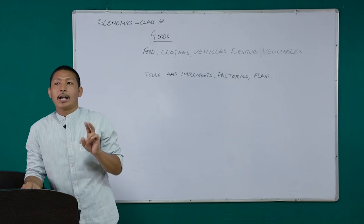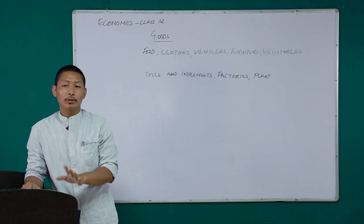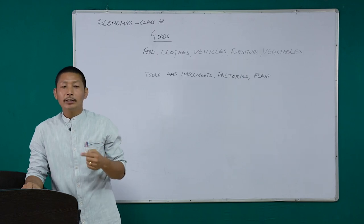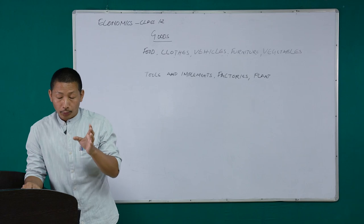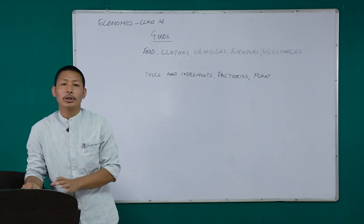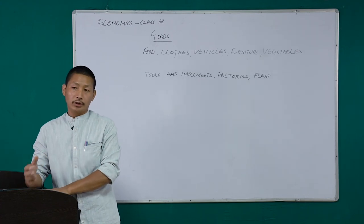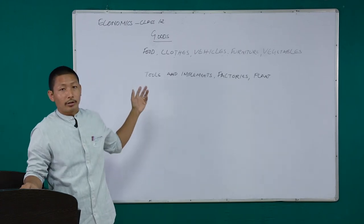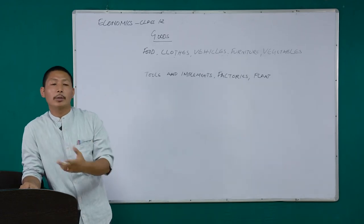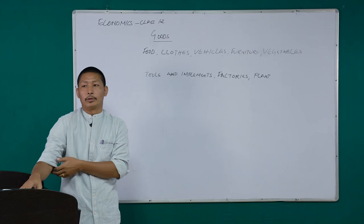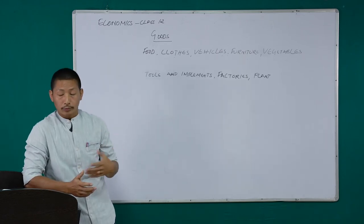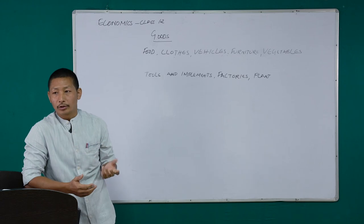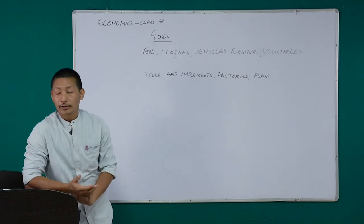Consumption goods have two different types. Number one: durable consumer goods. Number two: non-durable consumer goods. From the term itself, durable consumer goods are those goods which give services over time — for a long period of time. You might want to look at the board. These are some examples mentioned there, and you will also find examples in your textbook.